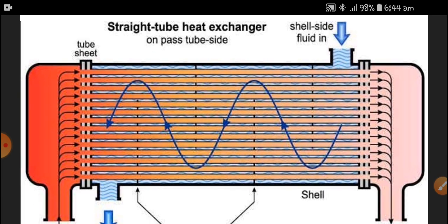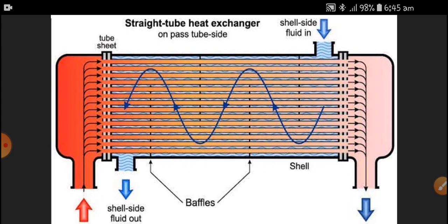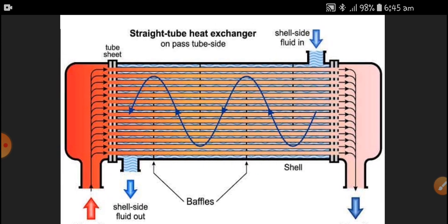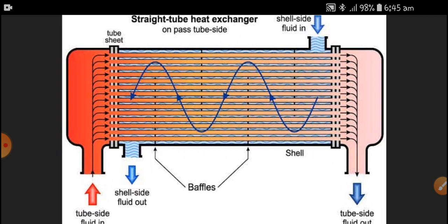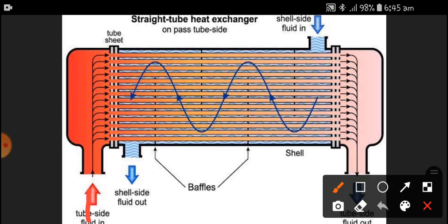Here I would like to show a straight tube heat exchanger. This is a typical picture of a heat exchanger having a shell and tube — a shell and tube type heat exchanger — where the hot fluid enters here and the cold fluid exits here. Similarly, a cold fluid enters on the other side and becomes hot fluid as it goes out. So we have to discuss the types and how the heat energy is being exchanged.